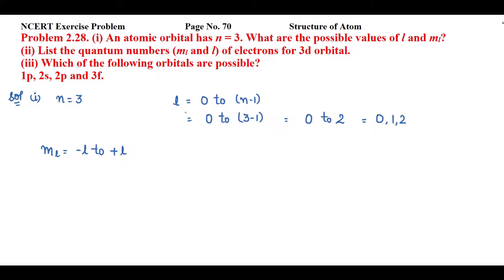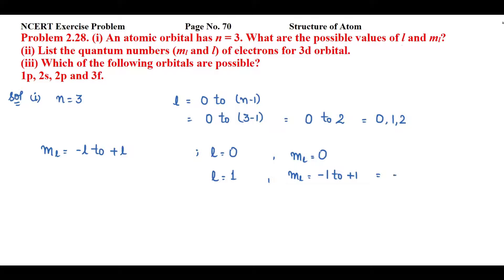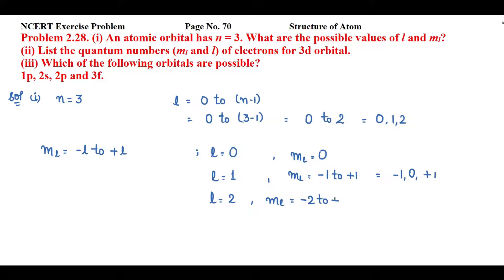ml will be from minus l to plus l. For l equal to 0, ml will be 0. For l equal to 1, ml will be minus 1, 0, and plus 1. For l equal to 2, ml will be minus 2, minus 1, 0, plus 1, and plus 2.